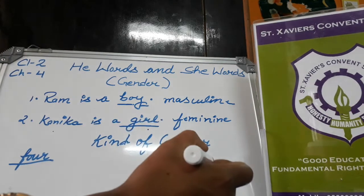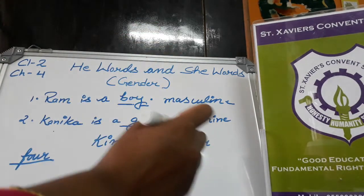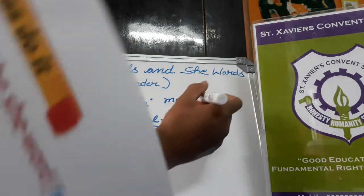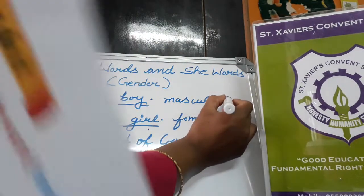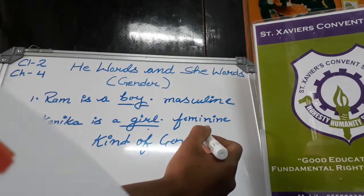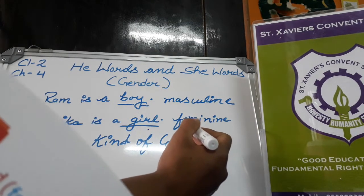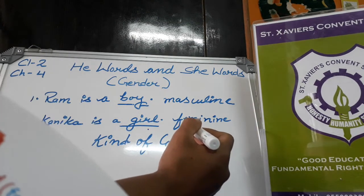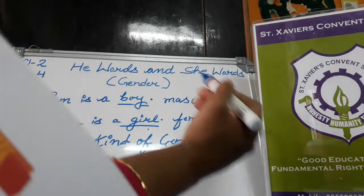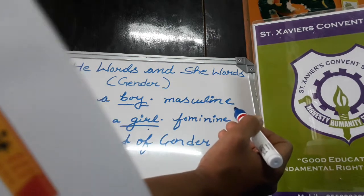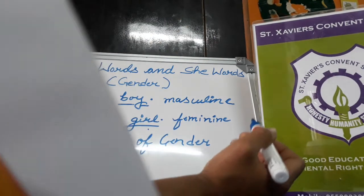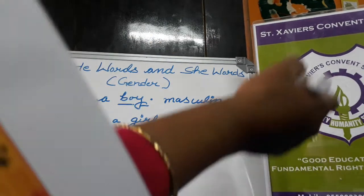The four kinds of gender are: first, masculine gender; second, feminine gender; third, common gender; and fourth, neuter gender.